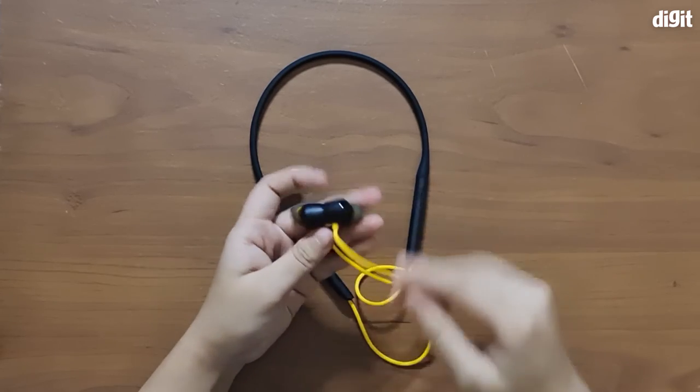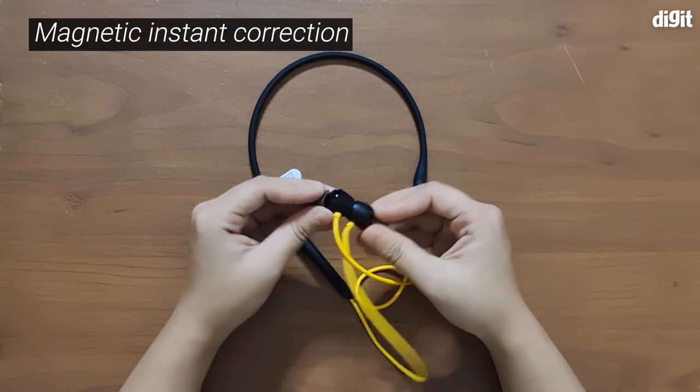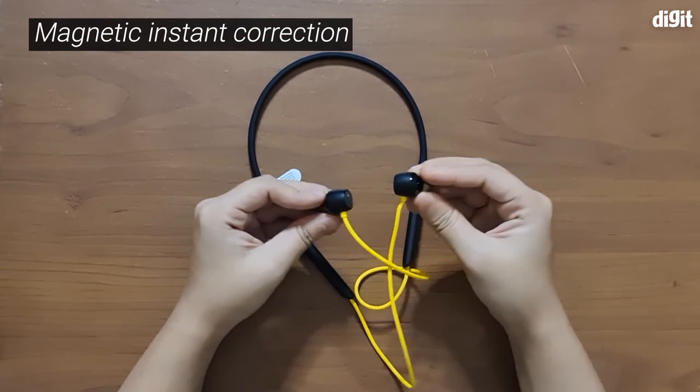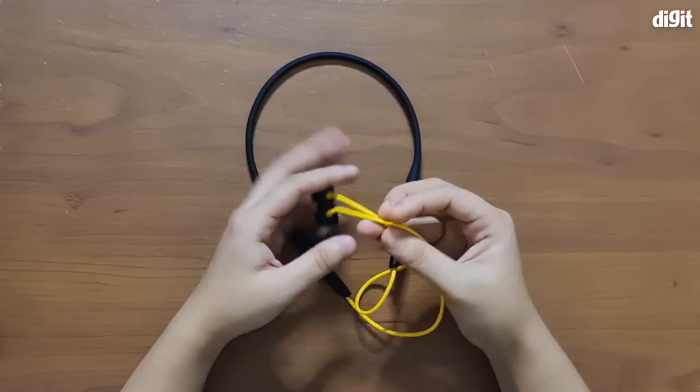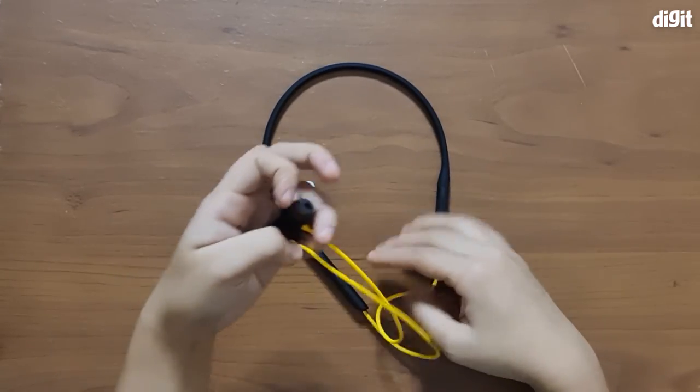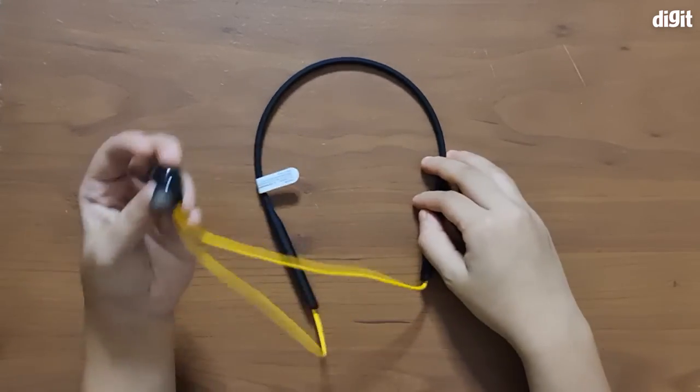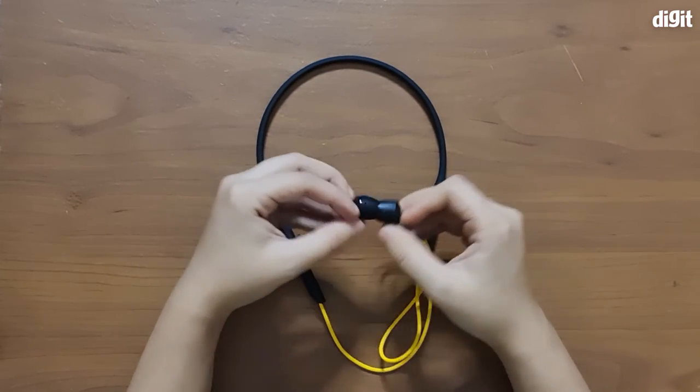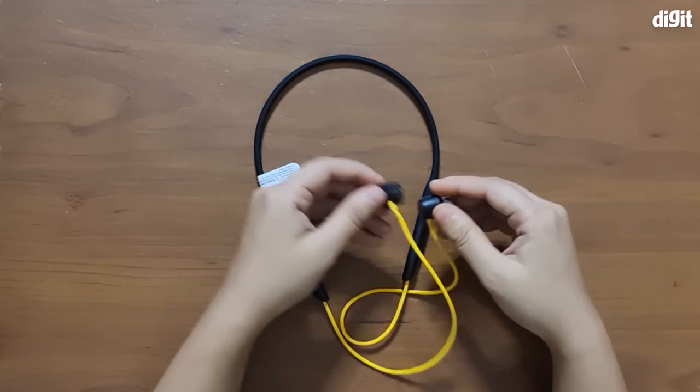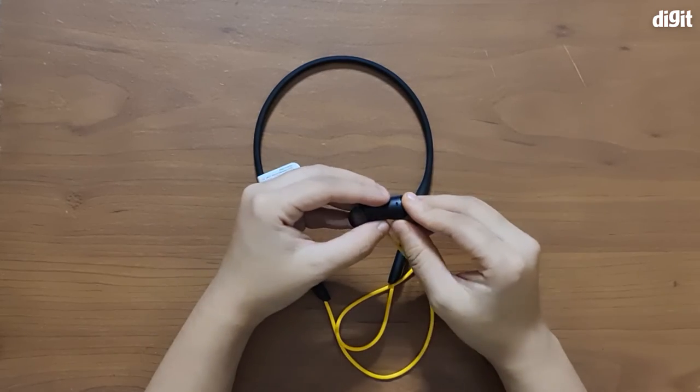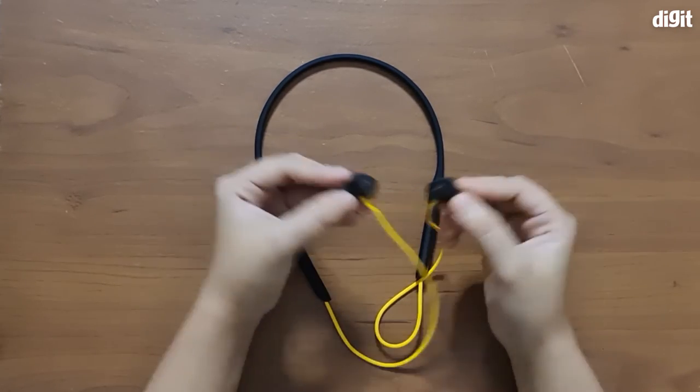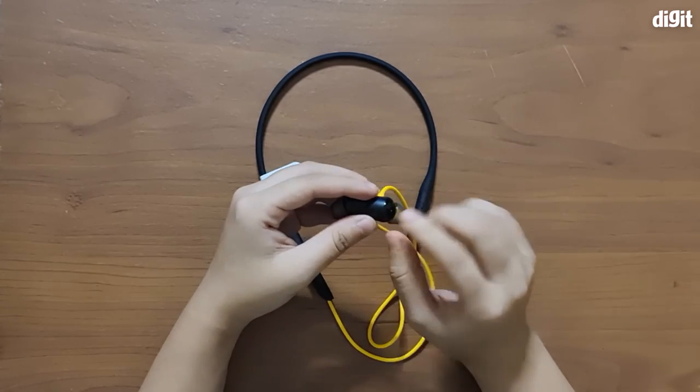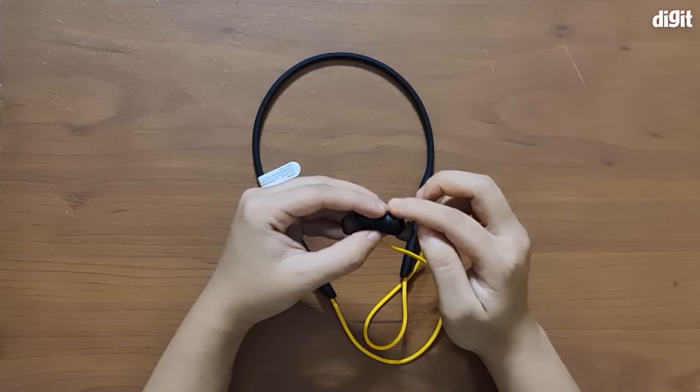Now let's come to the earbuds themselves. As you can see, these have magnetic rear housings which make them attach together magnetically. This is pretty neat for when they're lying idly on your chest when they're not in use. They'll just attach to each other and not dangle around a lot. So as you can see, we don't really have an on and off switch here, it is just the magnetic connection itself.